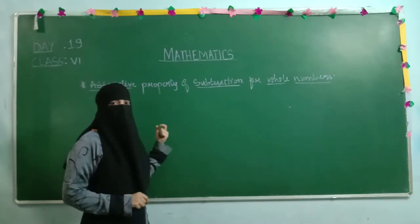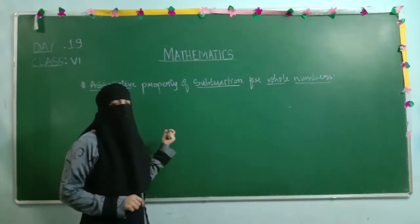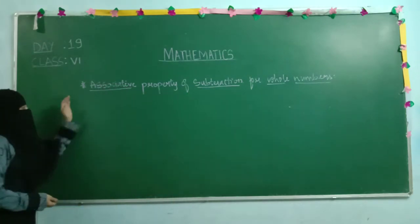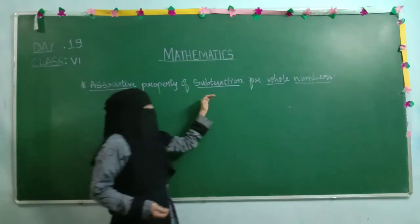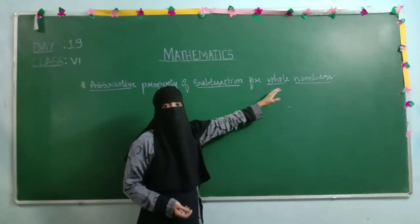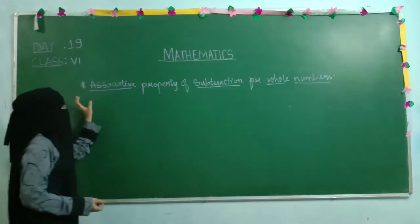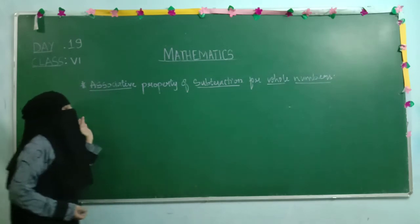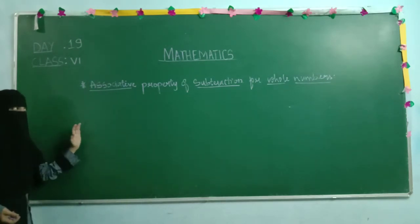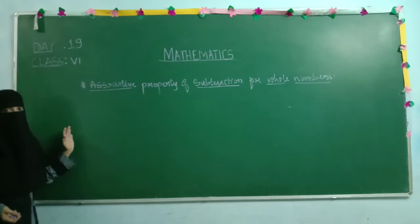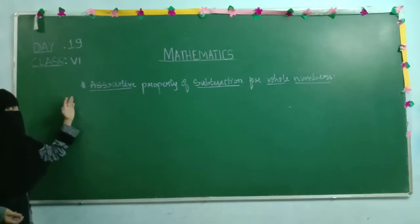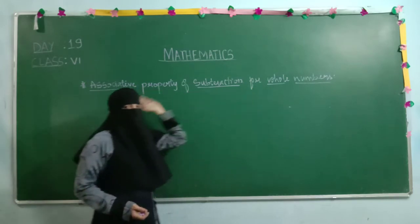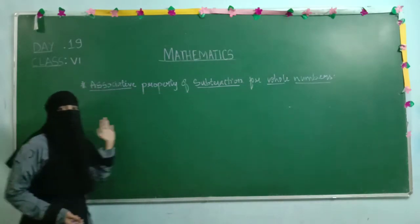First we are going to verify for whole numbers whether they are associative or not under subtraction. Our question is associative property of subtraction for whole numbers. We are verifying for whole numbers under the subtraction operation. There are three important things: which property, which operation, and for which whole numbers. So associative property, for subtraction, and for whole numbers.